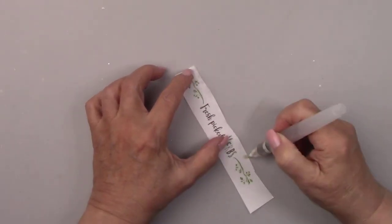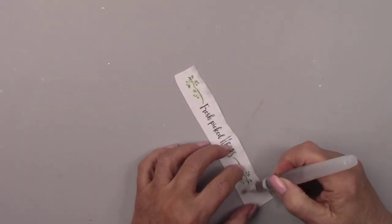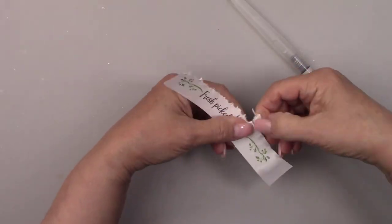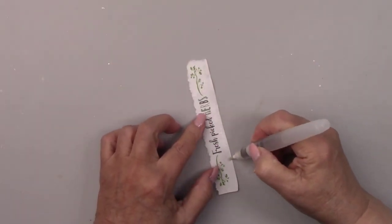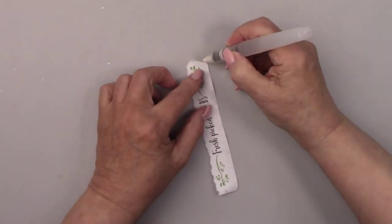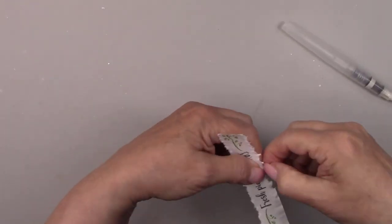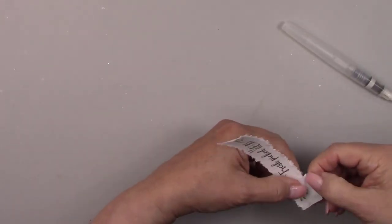I'm wetting the paper around the verbiage that's going on the front of the spice box holder and then tearing the paper to size. The water helps the paper tear easier and when decoupaging it's much easier to blend a picture with torn edges rather than a sharp cut edge.